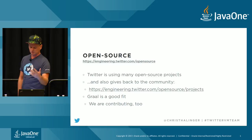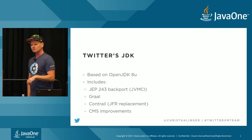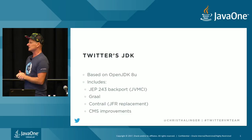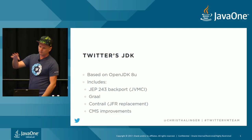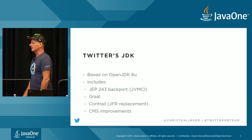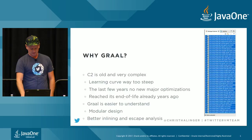We have our own JDK build, which is based on OpenJDK 8U. What we did is backport JEP 243 — that's the JVMCI — from 9 to 8 into our JDK. Then we have Graal in there, something called Contrail which is a JFR replacement type of thing, and a bunch of CMS improvements. This JDK runs all of our services.